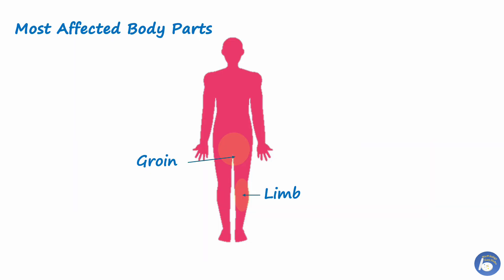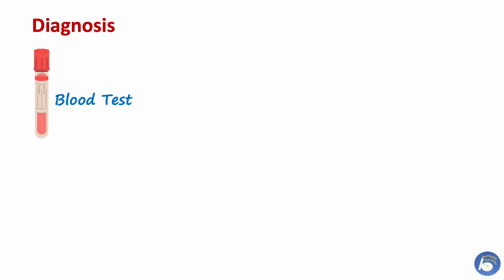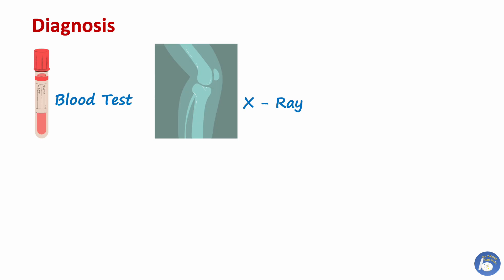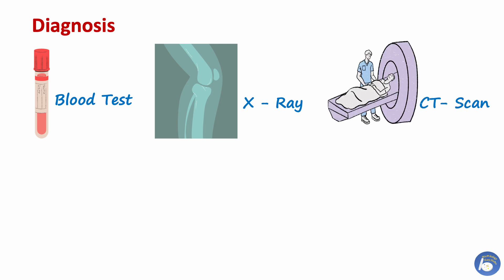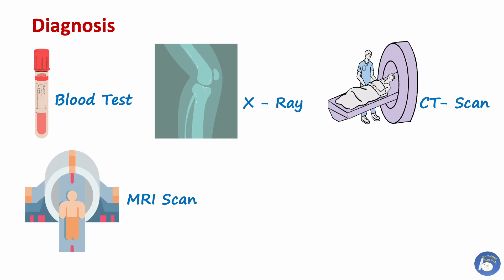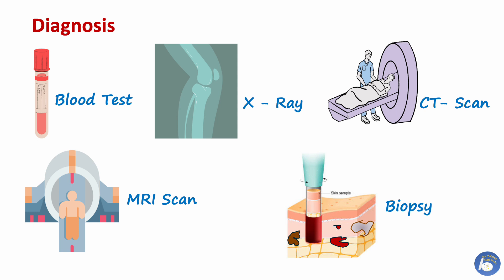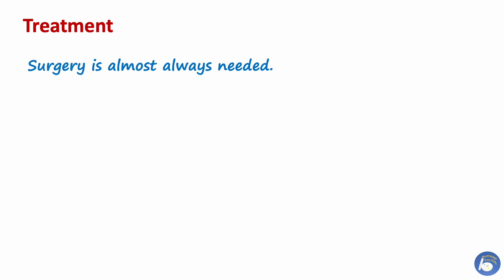The most commonly affected body parts are the limbs and groin area. For diagnosis, these steps are followed: first is a blood test at the early stage. As the disease progresses, X-ray of soft tissues, then CT scan and MRI scan are used. For definitive diagnosis, surgical exploration or biopsy of a lesion is performed.